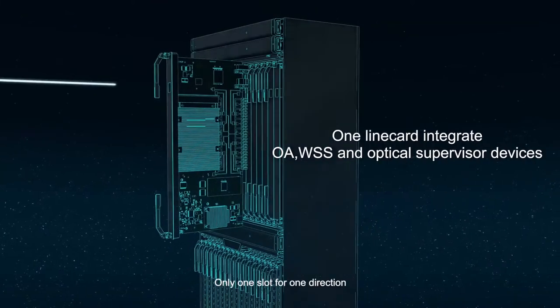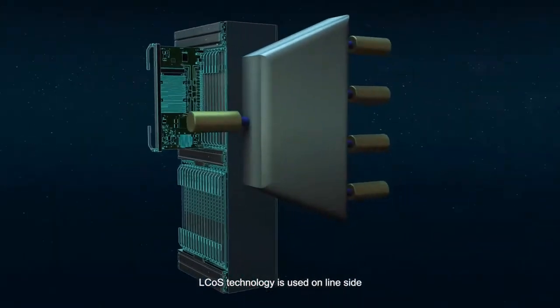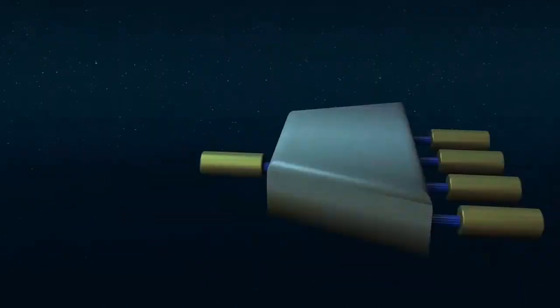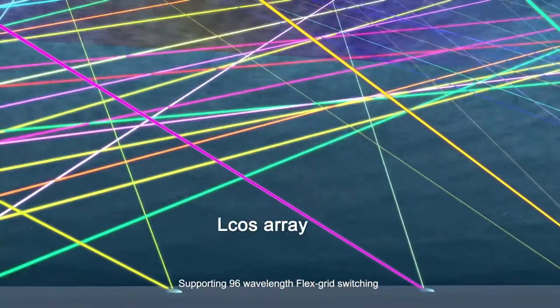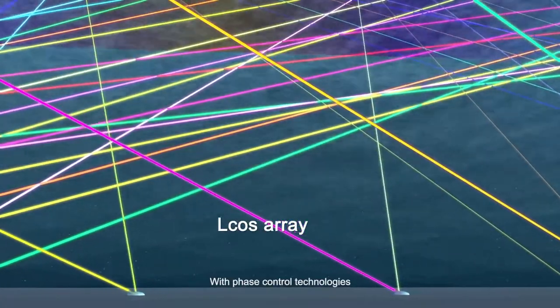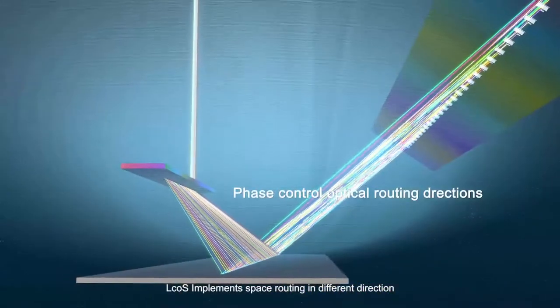Only one slot for one direction. LCoS technology is used on line side, supporting 96 wavelength flex grid switching. With phase control technologies, LCoS implements space routing in different directions.